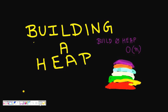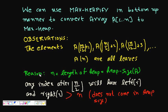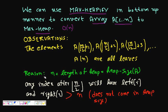We can use max_heapify — the function that makes a heap follow the max heap property, where the parent's value is greater than both its left and right child's value. We run max_heapify in a bottom-up manner to convert an array of n elements into a max heap in O(n) time.